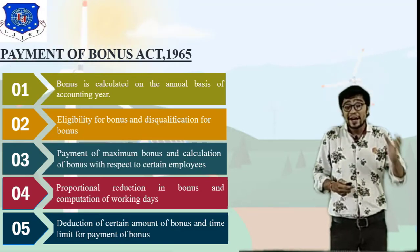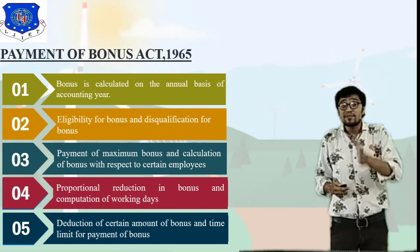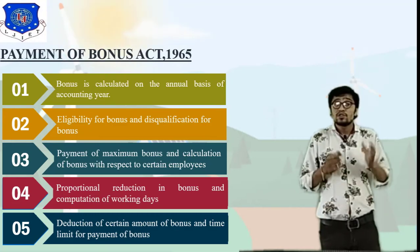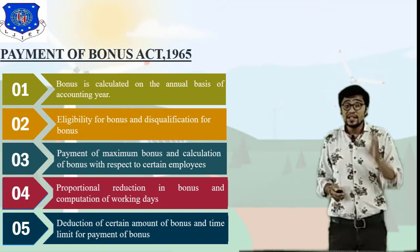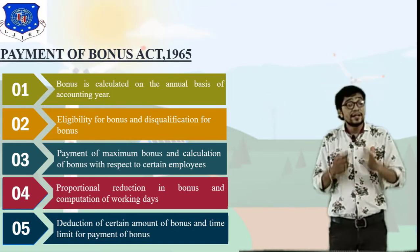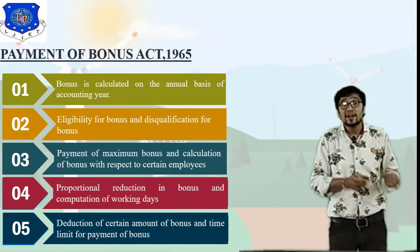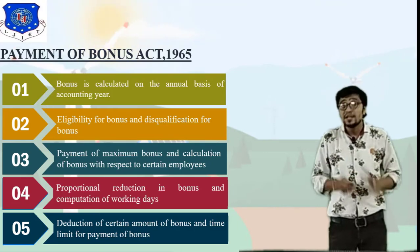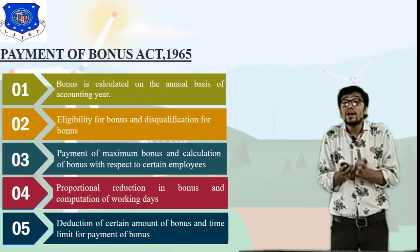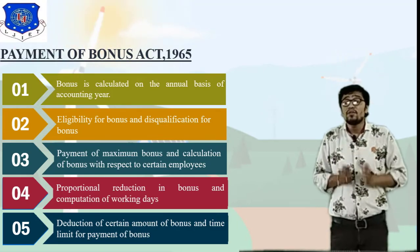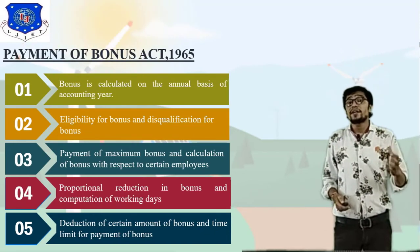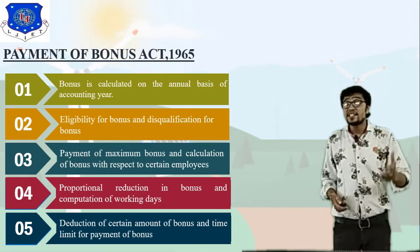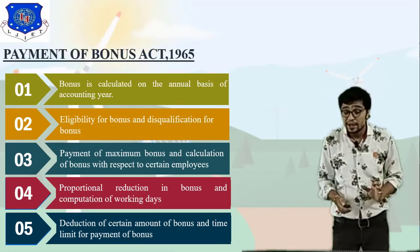The fifth main function of the Payment of Bonus Act is deduction of a certain amount of bonus and the time limit for payment of bonus. This act is followed by each and every industry — from small factories to MNC companies. The bonus is calculated on the basis of the accounting year.